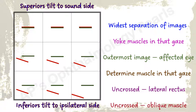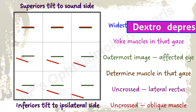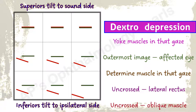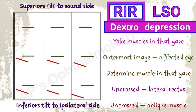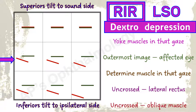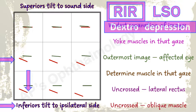Here, maximum separation of images is in levo depression. The yoke muscles acting in levo depression are the left inferior rectus and the right superior oblique. Red is the vertically outermost image, so the right eye is involved — there is a right inferior rectus palsy. This is a crossed diplopia, so the rectus checks out. The tilt is towards the right or ipsilateral side, so inferior checks out.